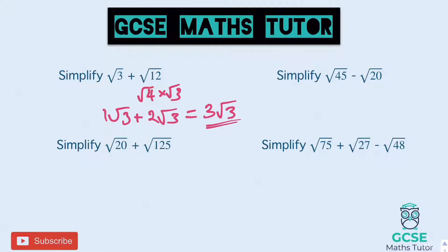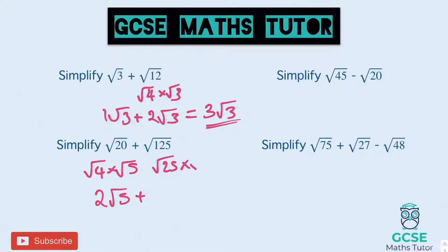Root 20 add root 125: root 20 is root 4 times root 5, which is 2 root 5. Root 125 is root 25 times root 5, which is 5 root 5. Adding those together, 2 plus 5 is 7, so we get 7 root 5 in total.